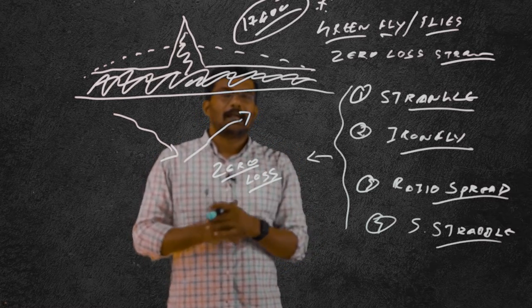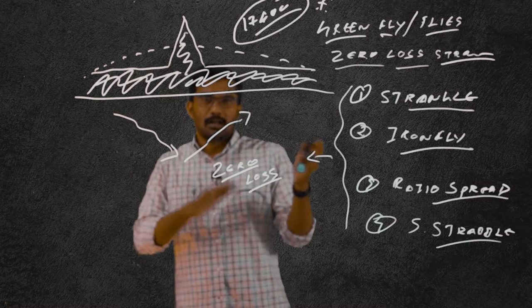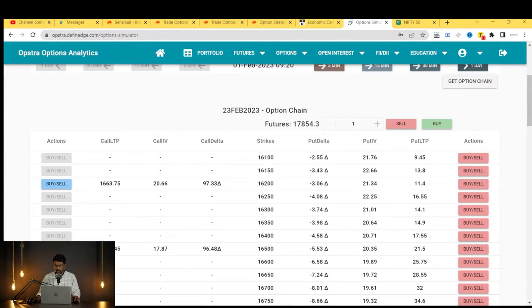Now let us backtest this green fly and see how you can construct it — how you can make any strategy into a zero loss strategy, whether nifty goes to zero or 50,000. You cannot construct a green fly directly. You have to first construct a straddle, strangle, iron fly, or any other non-directional strategy, then convert that main strategy into a green fly. Green fly strategy is a no-loss strategy.